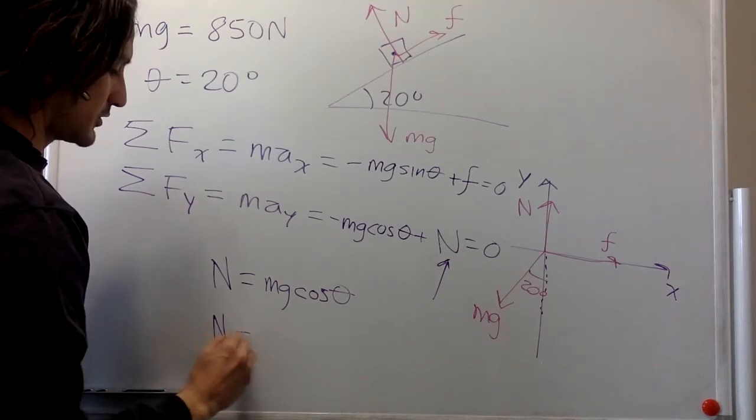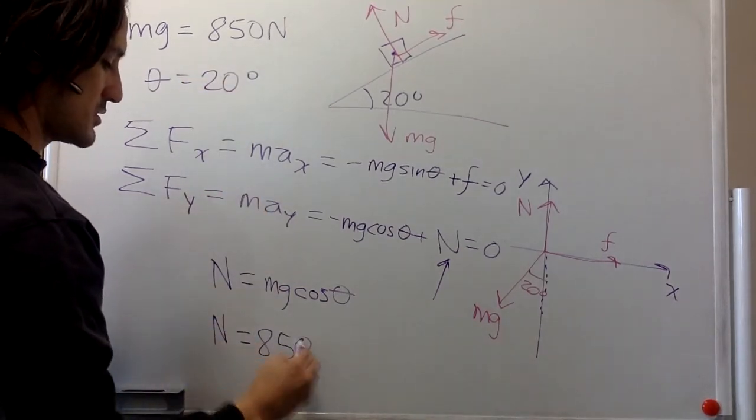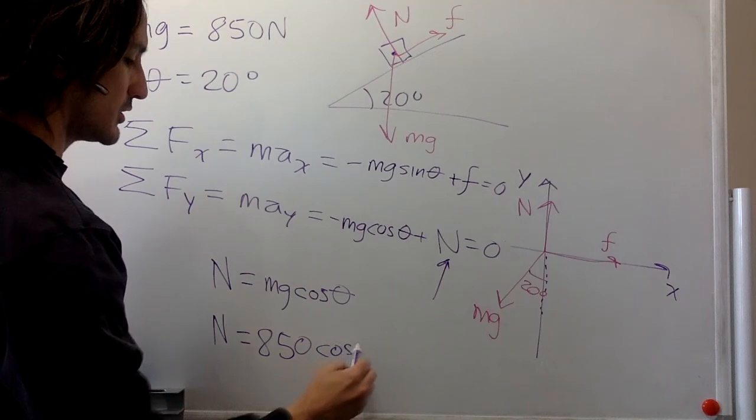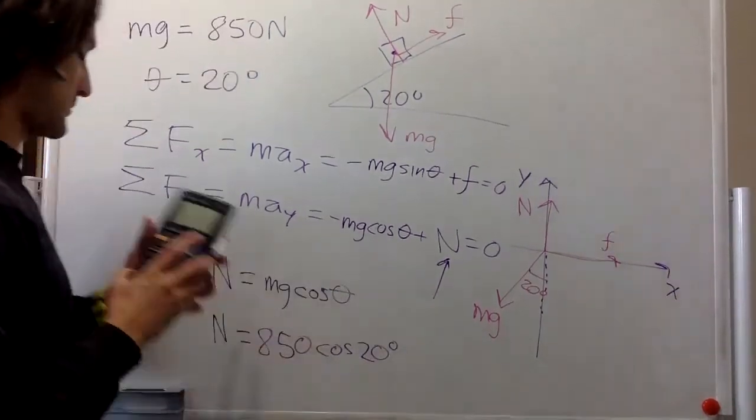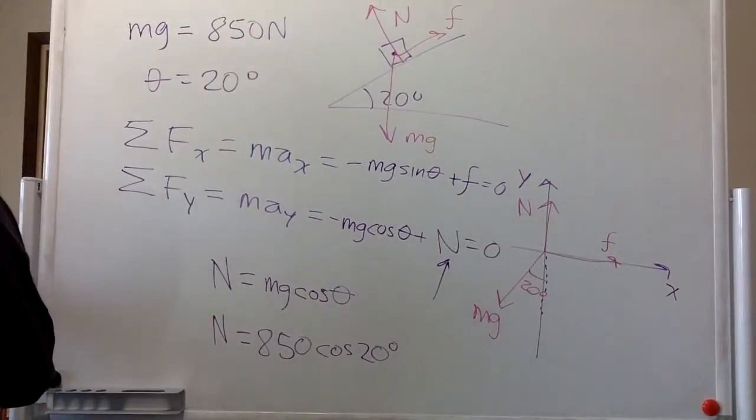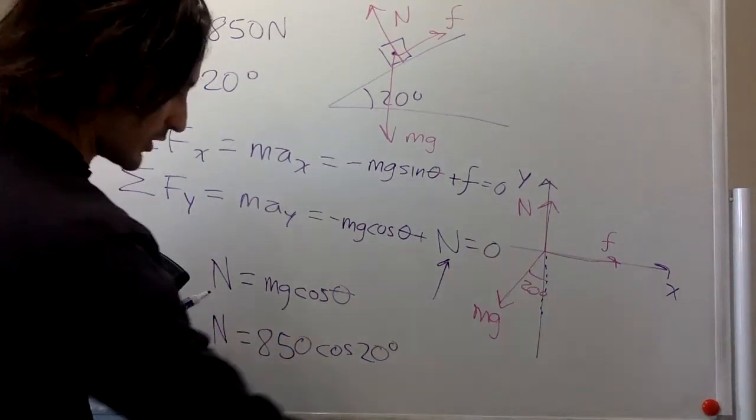So we can plug in the numbers. Mg is 850 newtons and cosine of 20 degrees. Cosine of 20 degrees is 0.94.